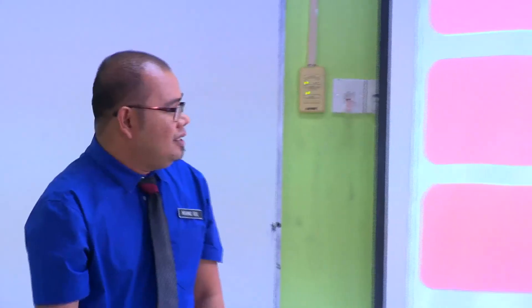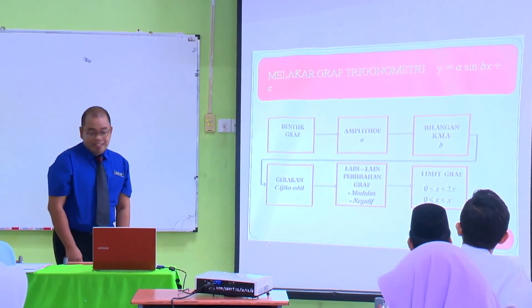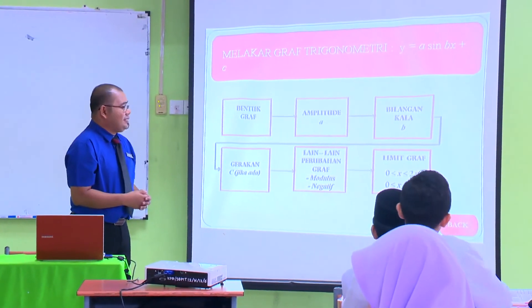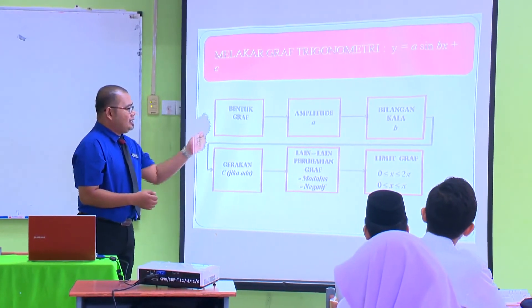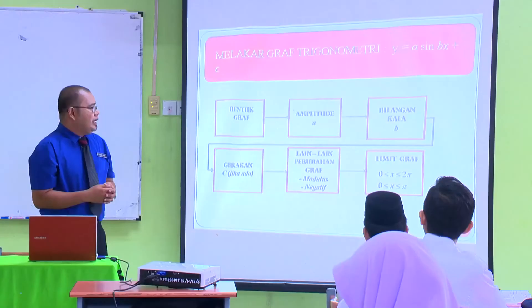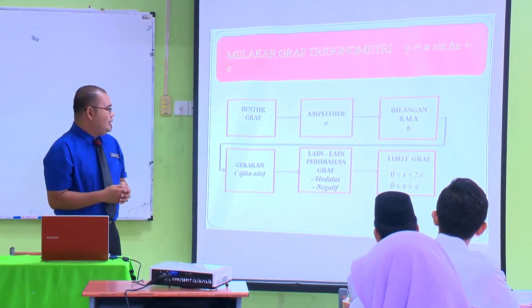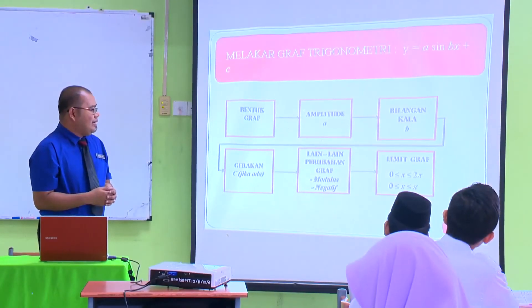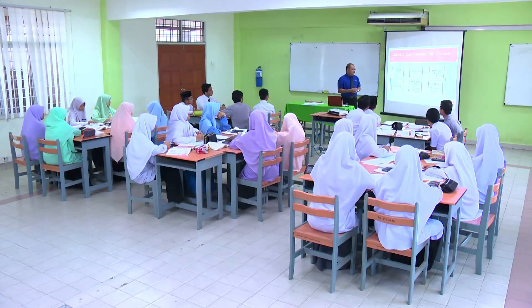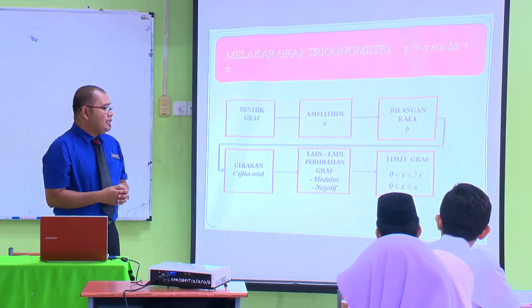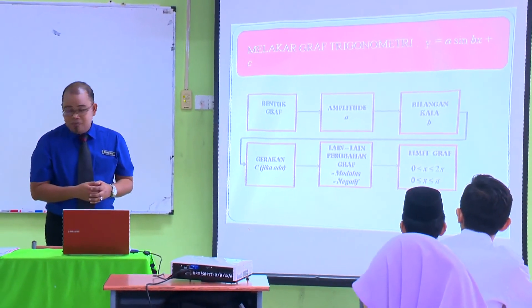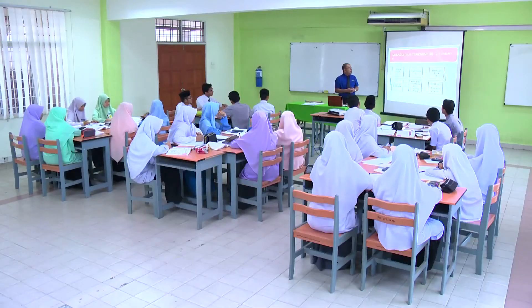Selain daripada melukis, kamu perlu melakar. Saya akan tunjukkan kamu langkah untuk melakar graf trigonometri dengan menggunakan peta pemikiran syata alik. Yang pertama sekali, kita tengok bentuk graf — sama ada dia sin, cos ataupun tangent. Yang kedua, kita pergi kepada A — amplitude. Yang ketiga, bilangan kalahan atau B. Yang seterusnya, gerakan C jika ada pergerakan. Yang keempat, lain-lain perubahan seperti modulus ataupun negatif. Dan yang terakhir sekali, kita tengok had graf — dari antara 0 hingga 2π atau π. Kamu boleh juga menggunakan peta pemikiran yang lain untuk lebih faham tentang tajuk graf trigonometri.